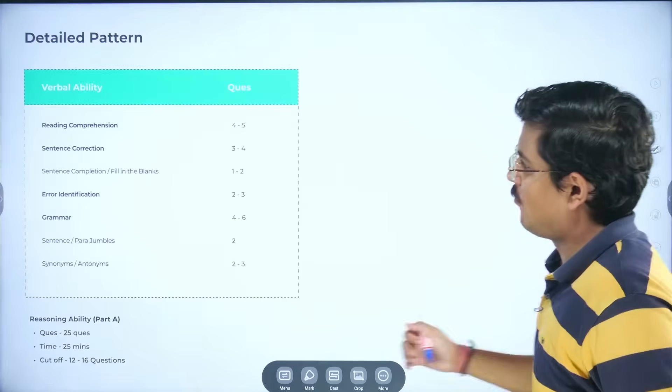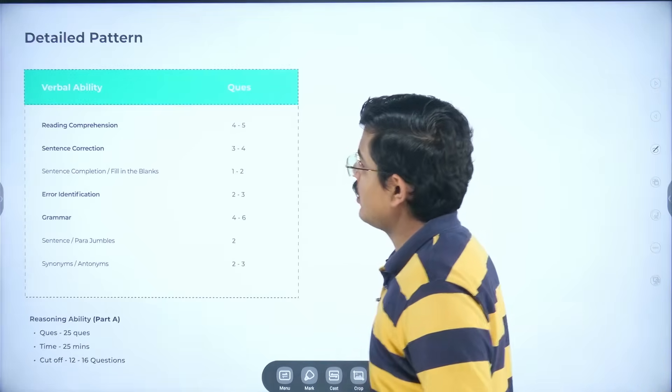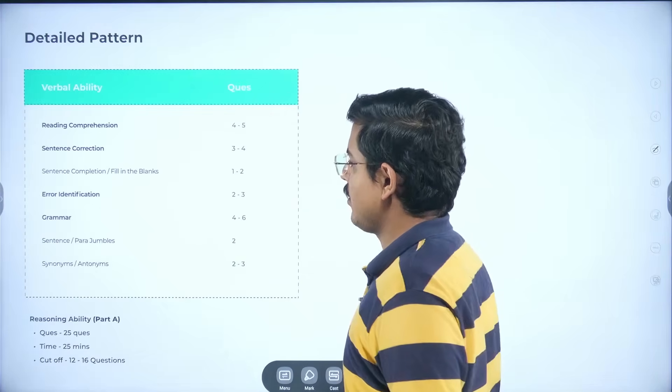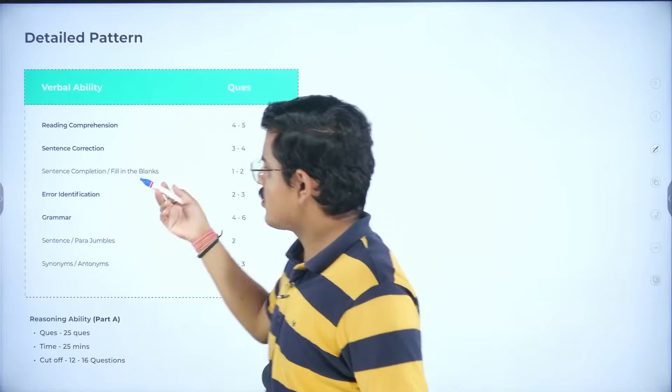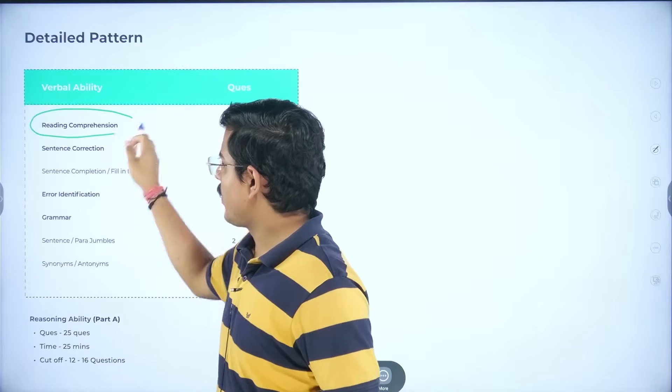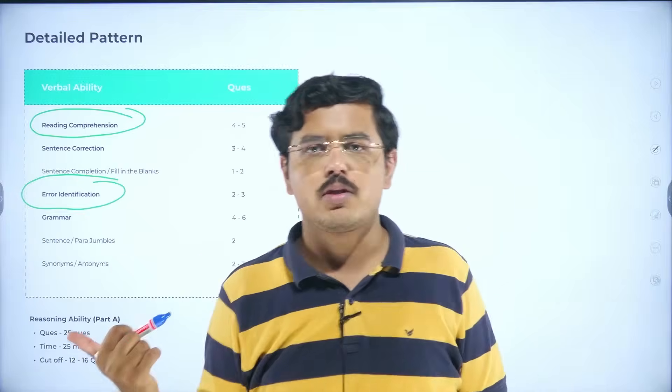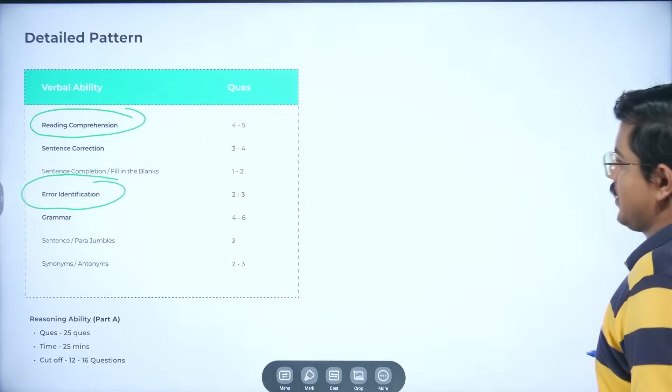You have verbal ability: reading comprehension, sentence correction, sentence completion, error identification. All this is there. Grammar and generally, the most common things that are seen is reading comprehension and error identification which carry the maximum marks. So, you should focus more upon these particular topics.